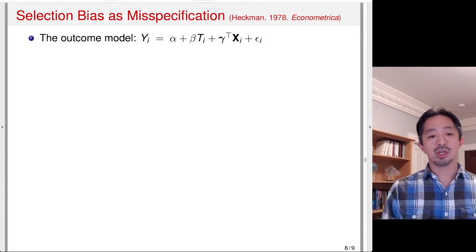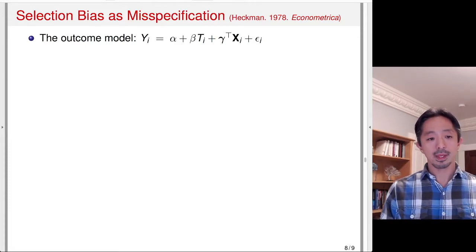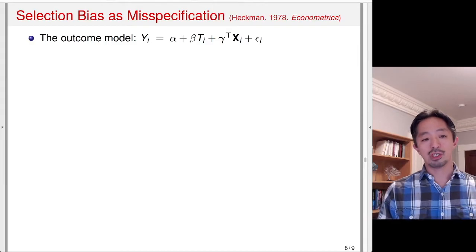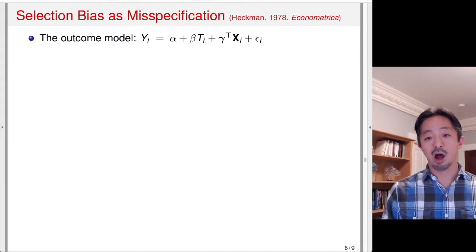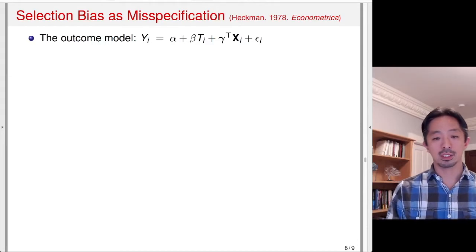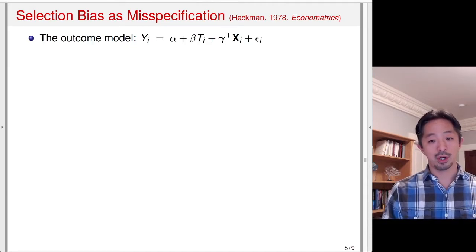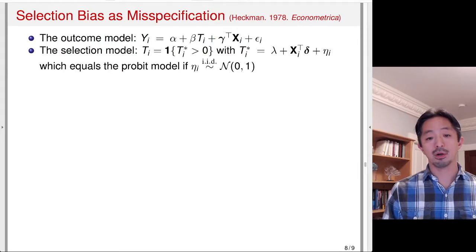The question is: are there ways to directly address selection bias? In economics there is a long tradition of selection bias models to address this issue. I'm going to start with the canonical model proposed by Heckman back in the 1970s.